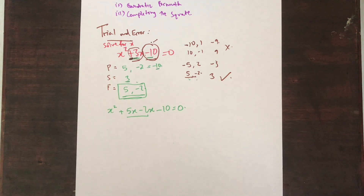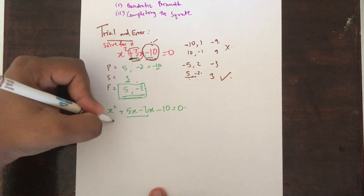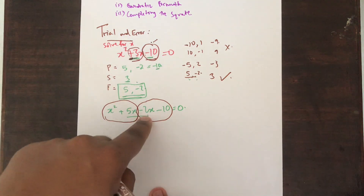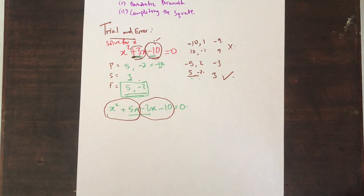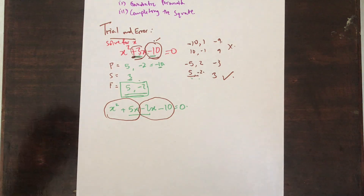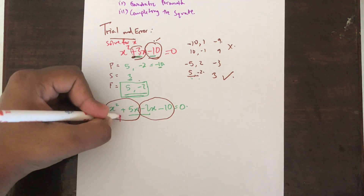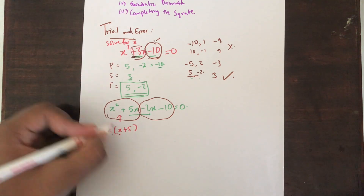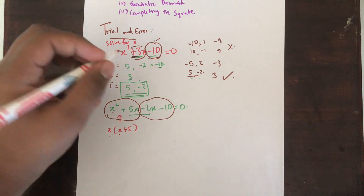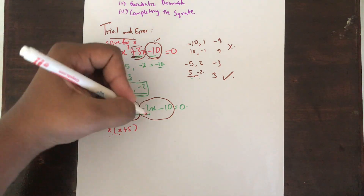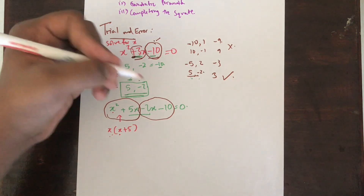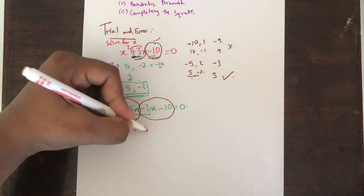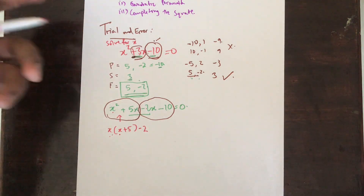After that we can start collecting like terms by grouping the first two terms and the last two terms. For the first group, x is common, so we have x(x + 5), because x times x gives x squared and x times 5 gives 5x. Then for minus 2 and minus 10, minus 2 is common, and 2 and 10 share a factor of 5.